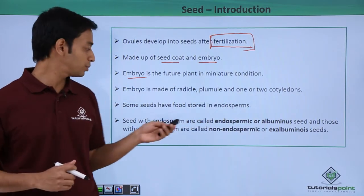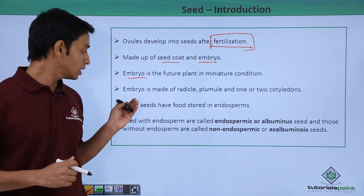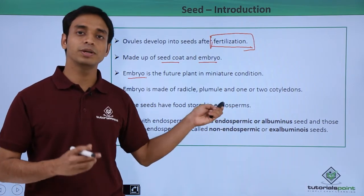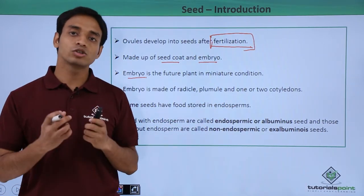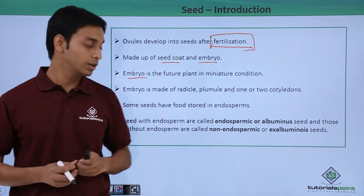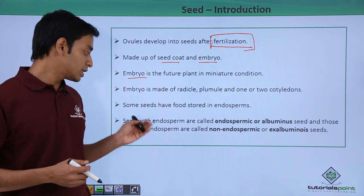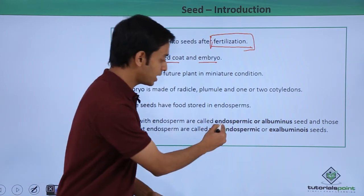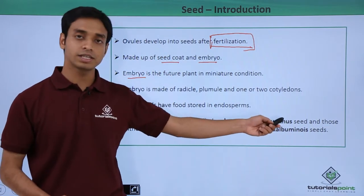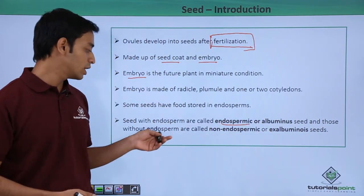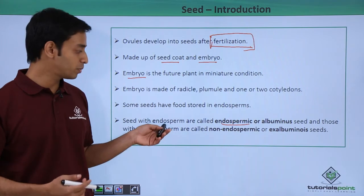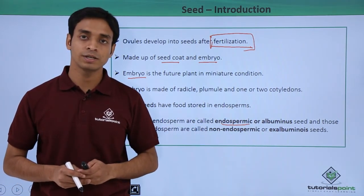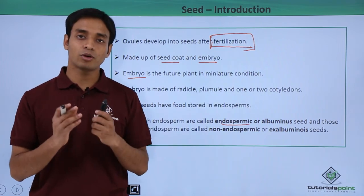Some seeds have stored food in the endosperm — for example, in the case of coconut, the endosperm contains the stored food. Seeds which have the endosperm are known as endospermic or albuminous seeds. Those which do not have the endosperm are known as non-endospermic or ex-albuminous seeds.